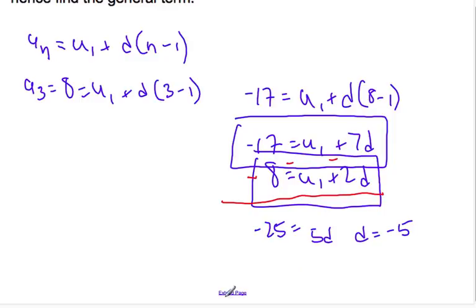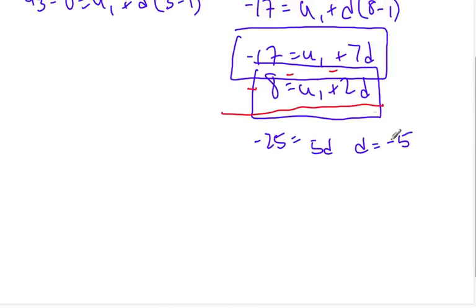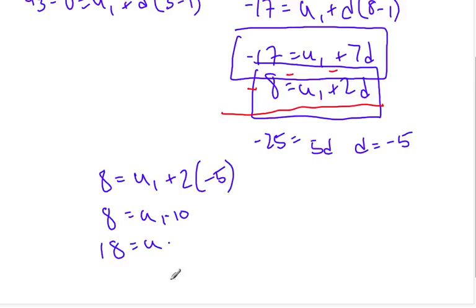With that, I have d is negative 5. If I want to find u1, I can plug it into either one of these two equations. Let's do the second one: 8 is equal to u1 plus 2 times negative 5. So 8 is equal to u1 minus 10. Add the 10, I get 18 is equal to u1.